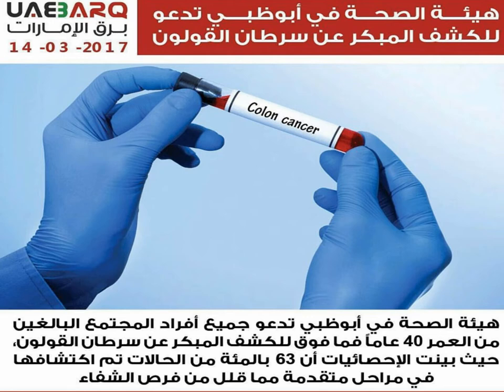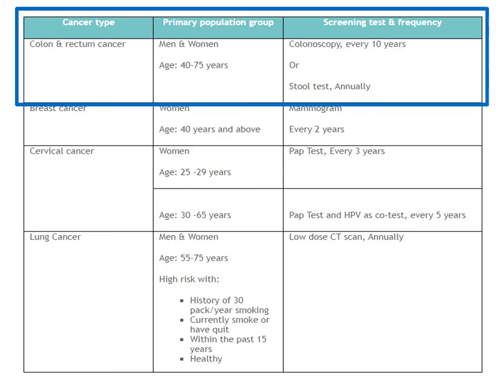A slide from the Abu Dhabi Health Authority shows that the majority of patients present with colorectal cancer at an advanced stage — 63% of patients in the Abu Dhabi registry. Therefore, in the UAE, the recommendation is to start screening at age 40, earlier than the US recommendation of 45. The guidelines recommend colonoscopy every 10 years or stool test annually, as part of a broader cancer screening program that also includes breast, cervical, and lung cancer screening.